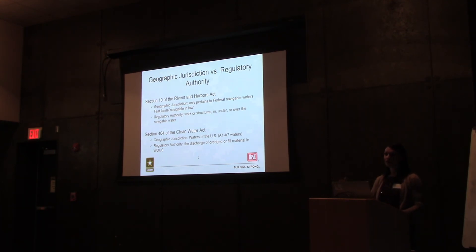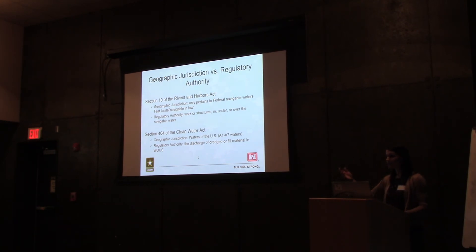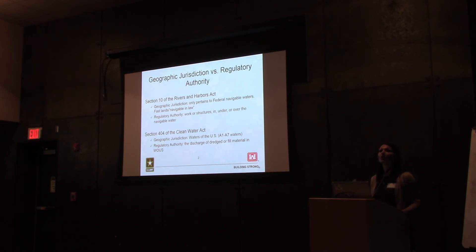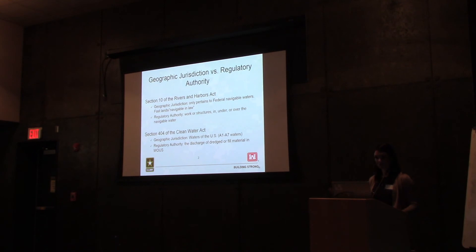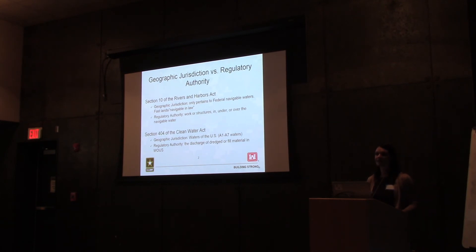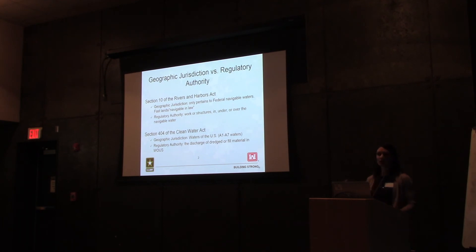The Rivers and Harbors Act was written in 1899 and was predominantly about navigation. Once a water is listed — even if it was converted to an upland or a giant pier was built over it — it is still on the list. That's the concept of 'navigable in law.' That area still requires a permit. The regulatory jurisdiction covers all work or structures in, over, under, or affecting that navigable water. For example, for the Super Bowl, someone put a zip line over the Mississippi River — because it was over navigable water and the Corps' mission includes protecting navigation, they needed a permit, even though no work occurred in the river itself. Under the Clean Water Act Section 404, the geographic jurisdiction is referred to as Waters of the US — A1 through A7 waters.